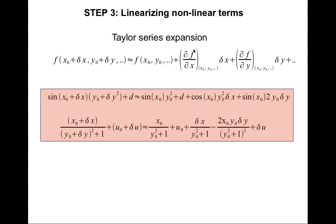Applying this, we can write an approximation for the first perturbed nonlinear equation and the second perturbed nonlinear equation. In this case, the whole expression is f evaluated at x-naught plus delta-x, y-naught plus delta-y, u-naught plus delta-u. The term f(x-naught, y-naught, u-naught) is the constant term; cos(x-naught) times y-naught squared is the partial of f with respect to x; and sine(x-naught) times 2 times y-naught is the partial of f with respect to y, all evaluated at the operating point x-naught, y-naught, u-naught.